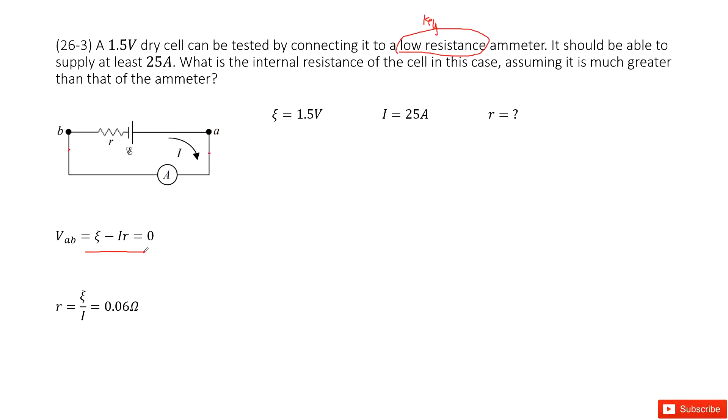And when we solve this equation, we get a function for r. It's just the emf divided by current I, and it is 0.06 ohms. Thank you.